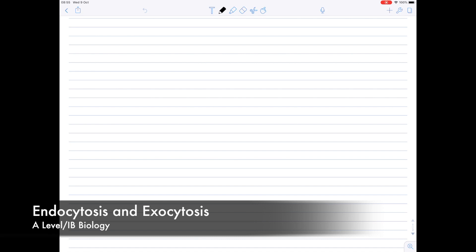In this A-level and IB biology video, we're going to be looking at the processes of endocytosis and exocytosis, and both of these are methods by which substances can enter and leave a cell.